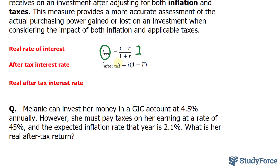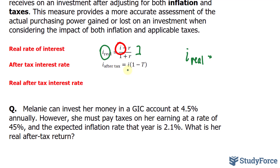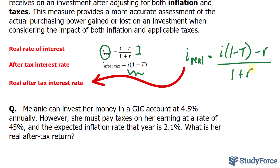In our situation, we have both tax and inflation to worry about. To find the formula we need for this scenario, I'll begin with I sub real — that top formula — and in place of I, I'll replace it with that expression. So we have I multiplied by one minus capital T, which represents the expected taxes, minus R, which is our inflation rate, all over one plus R. Use this formula whenever you need the real after-tax interest rate.